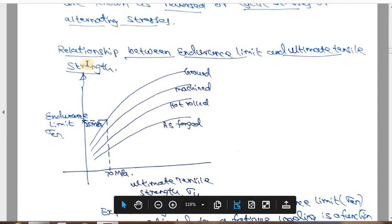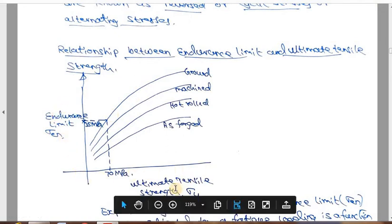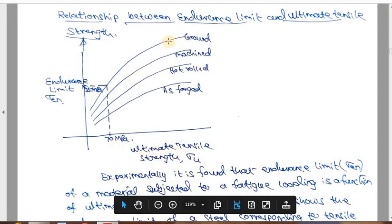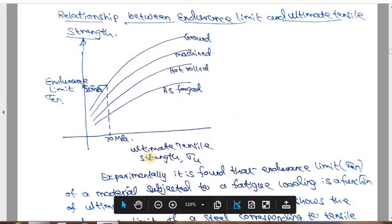There is another graph showing the relationship between endurance limit and ultimate tensile strength. The x-axis has ultimate tensile strength sigma_u and the y-axis has endurance limit sigma_en. This is for steel material with different surface finish conditions. The top graph is for a ground finish, the next for a machined surface finish, then for a hot-rolled finish, and finally for an as-forged surface. Ground finish has the best surface roughness, while as-forged has a very rough surface.